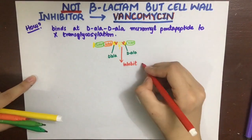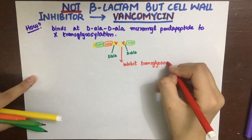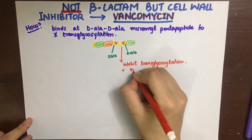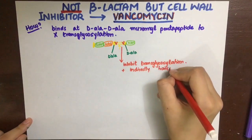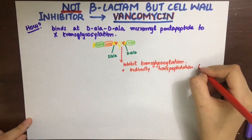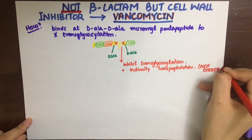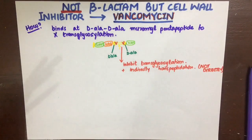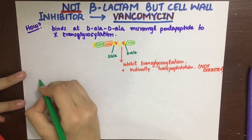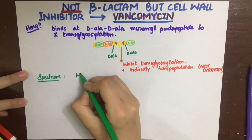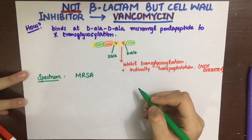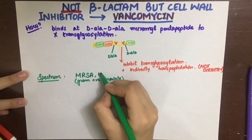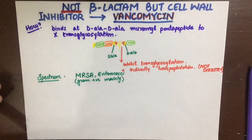What vancomycin will do is bind to these D-alanine residues and prevent their binding with each other, and thus transglycosylation will be inhibited. Once vancomycin inhibits transglycosylation, transpeptidation will also be inhibited — but indirectly, not directly via inhibiting the transpeptidase enzyme like penicillins, cephalosporins, and carbapenems. Vancomycin is the drug to remember for methicillin-resistant Staph aureus (MRSA) and also for enterococci.